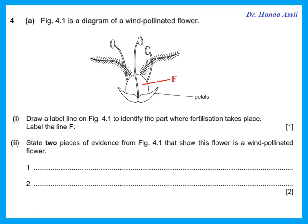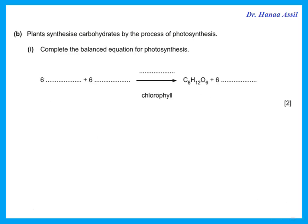State two pieces of evidence from the diagram that show that this flower is wind pollinated. Remember, give only what is visible in the figure. This flower is wind pollinated because, first of all, it has a long feathery stigma, and it has a large anther hanging out.